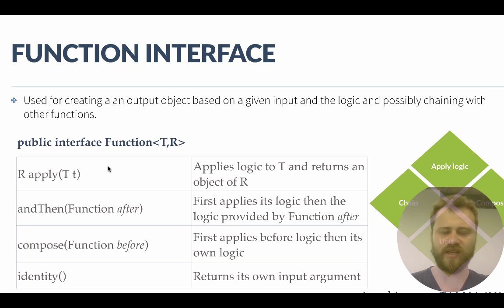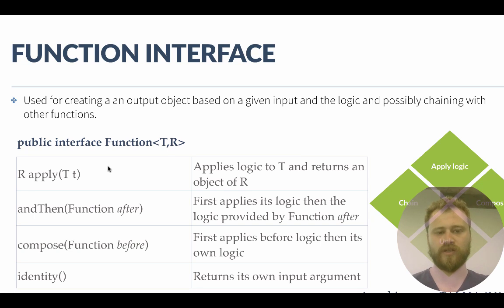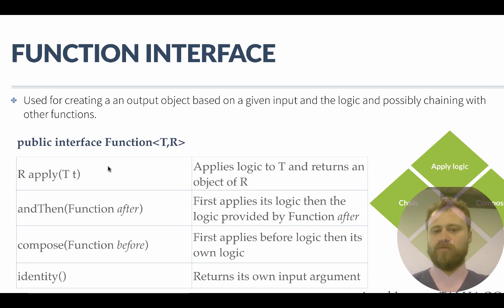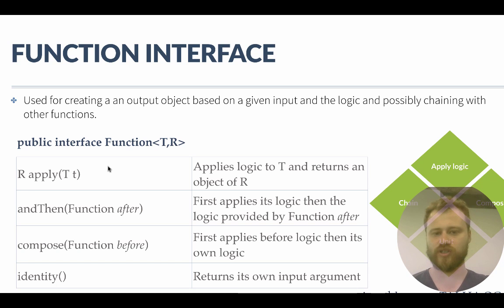The compose method works in the opposite order: first the apply method of the 'before' function is invoked, and then our function's apply method is invoked. The fourth method, identity, returns the input argument as-is — it is related to monads in functional programming, but we won't dive into those details now.